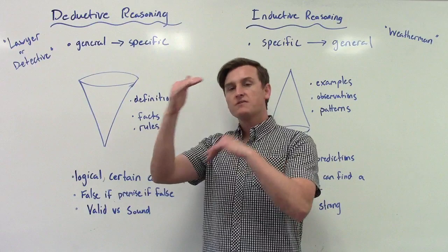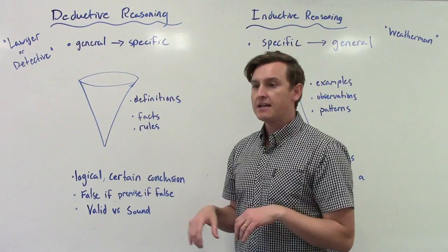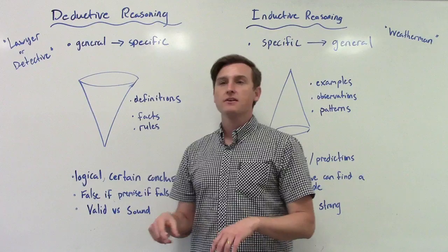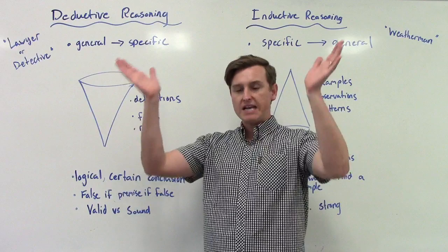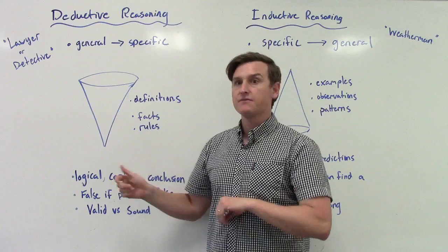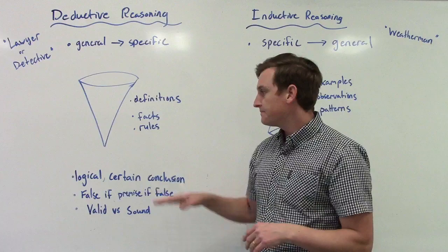All those things are pretty general, right? The time the sun goes down, the idea that it's dark once the sun goes down, the idea that you got a video from a certain day. Those are all kind of specific ideas, but when you put them all together, you kind of pinpoint suspect was there at this specific time. So that's kind of an idea of how a lawyer would use deductive reasoning to make a case or to get people to think a certain conclusion.